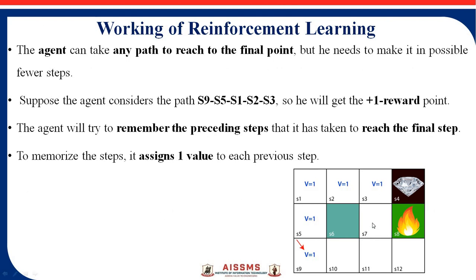The agent can take any path to reach the final point but needs to do so in fewer steps. For example, the path S9, S5, S1, S2, S3 to diamond takes a total of five steps. The agent needs to identify the shortest path to reach the diamond while avoiding all obstacles. Reinforcement learning means a feedback-based technique where at each and every step the agent takes a decision and gets a reward for either a good or bad action.